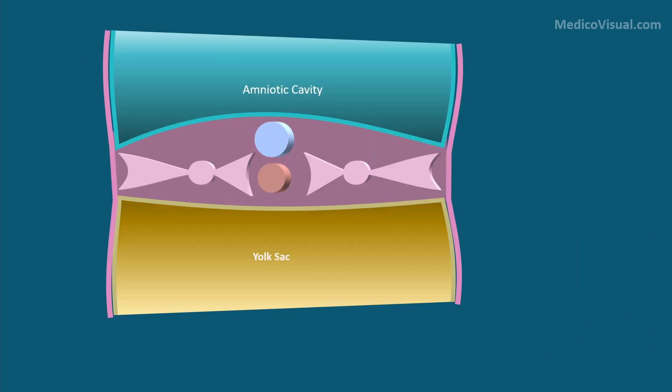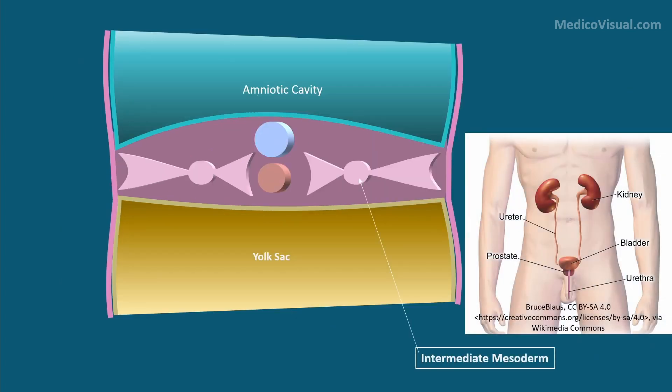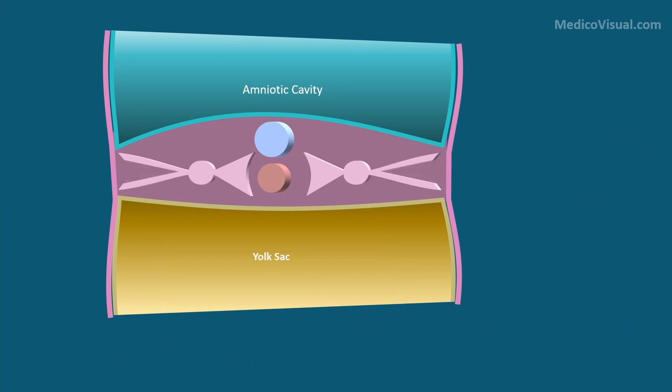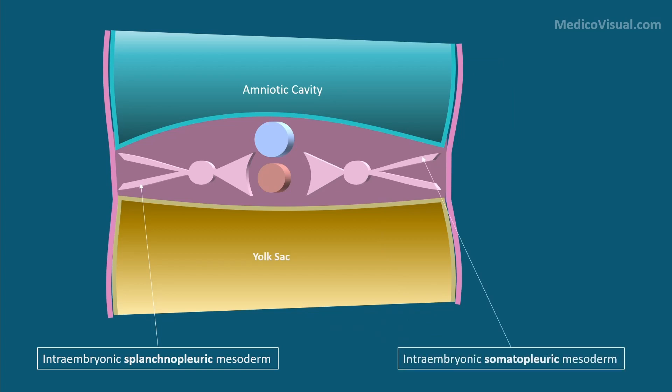The intermediate mesoderm is the precursor of urogenital system. For the lateral plate mesoderm, cells within the center of lateral plate mesoderm die and form a cavity called intraembryonic coelom, thus splitting the lateral plate mesoderm into somatic and splanchnic layers.